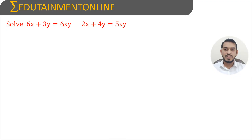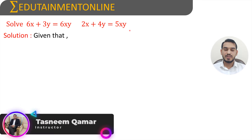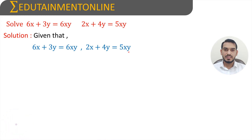Solve 6x plus 3y equals 6xy and 2x plus 4y equals 5xy. The given equations are 6x plus 3y equals 6xy and 2x plus 4y equals 5xy. Converting these two equations into the linear form.